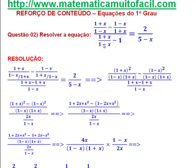Aqui já tinha visto, né? 1 menos x — não tem nem y aqui. E eu vou descobrir que o x também não pode ser 1. Então, estou descobrindo que x tem que ser diferente de 1, e x tem que ser diferente de menos 1. E tem mais uma aqui: no segundo membro, eu tenho 5 menos x. O x não pode ser 5, porque 5 menos 5 dá 0.